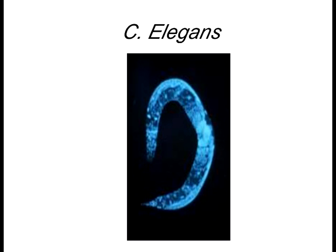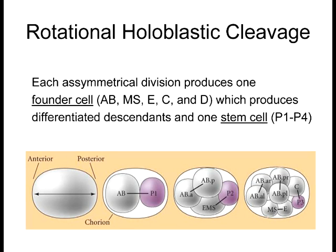C. elegans is fascinating because it develops an exact number of cells every single time — approximately 1,079 cells. It has rotational holoblastic cleavage similar to humans. Remarkably, after the very first cell division, one of the resulting cells is already pre-established autonomously to become the germline cells, carrying the maternal components needed. It's called rotational holoblastic cleavage because the entire oocyte undergoes cytokinesis, but each time the mitotic spindle shifts before splitting.